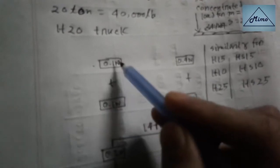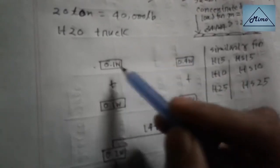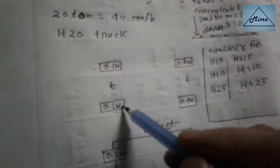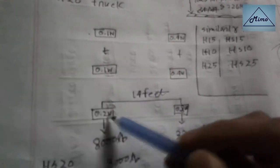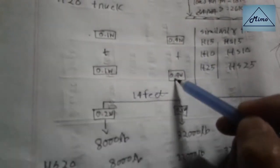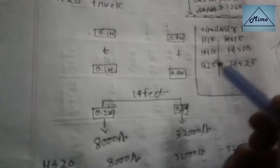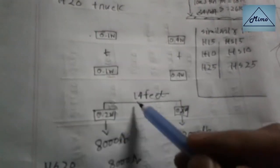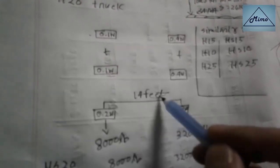Here is the H20 truck. This is the front wheel and this is the rear wheel. There are four wheels on a truck. The load fractions are 0.1W for front axle wheels and 0.4W for rear axle wheels. The sum 0.1 + 0.1 + 0.4 + 0.4 equals 0.8W total. The distance between the front wheel and rear wheel is 14 feet.